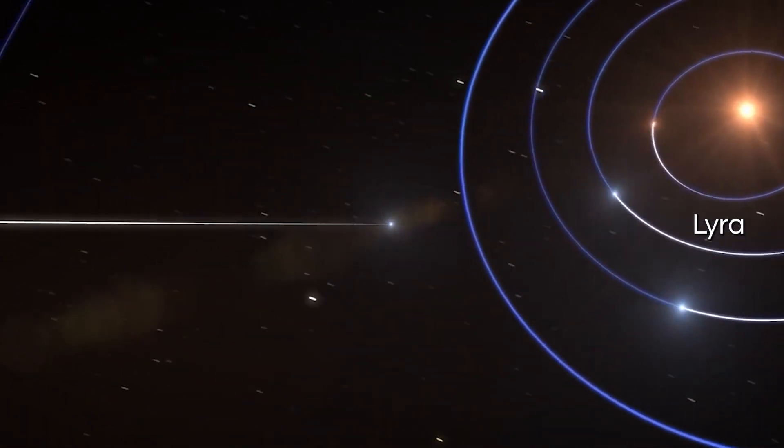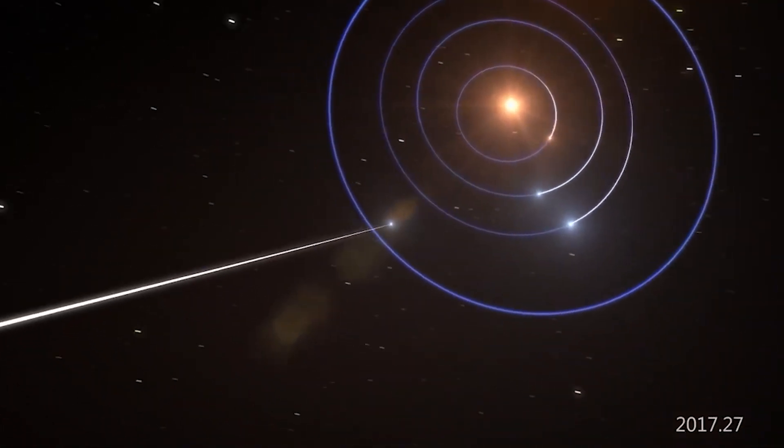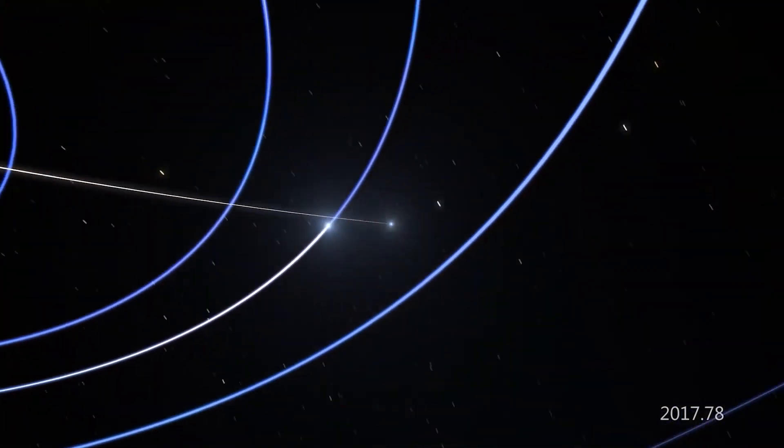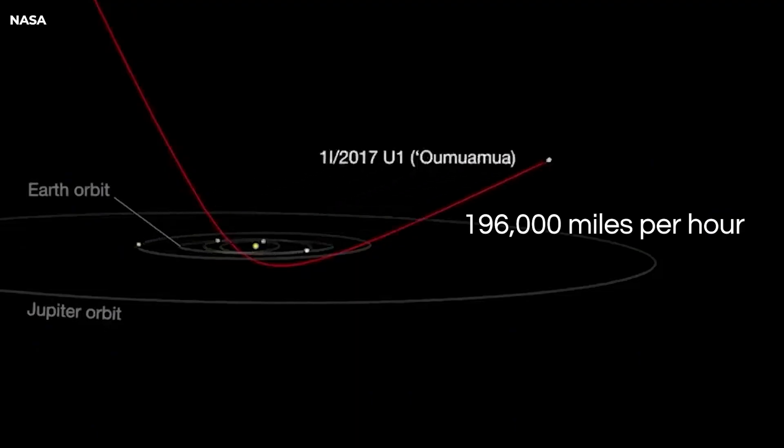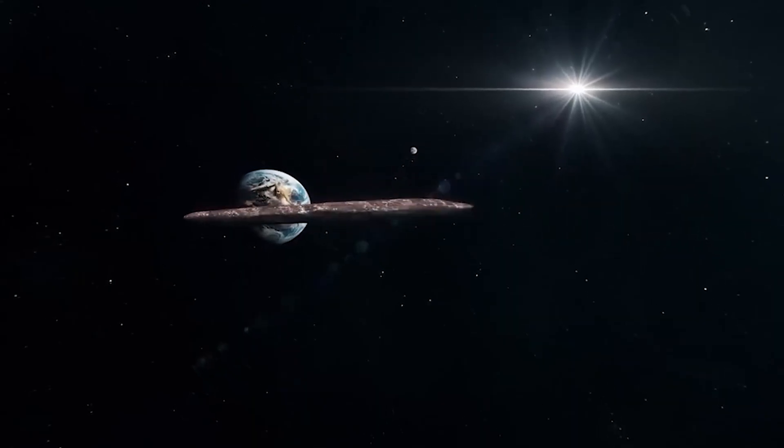Its trajectory suggests it came from the constellation Lyra, approximately 600 light-years away, and on September 9, 2017, it passed through our solar system at a staggering speed of 196,000 miles per hour, or 87.3 kilometers per second.